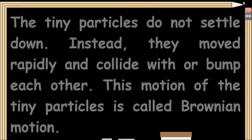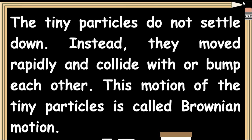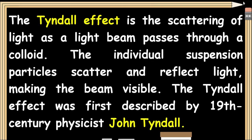The tiny particles do not settle down. Instead, they move rapidly and collide with or bump into each other. This motion of the tiny particles is called Brownian motion. The Tyndall effect is the scattering of light — as a light beam passes through a colloid, the individual suspension particles scatter and reflect light, making the beam visible. The Tyndall effect was first described by 19th century physicist John Tyndall.